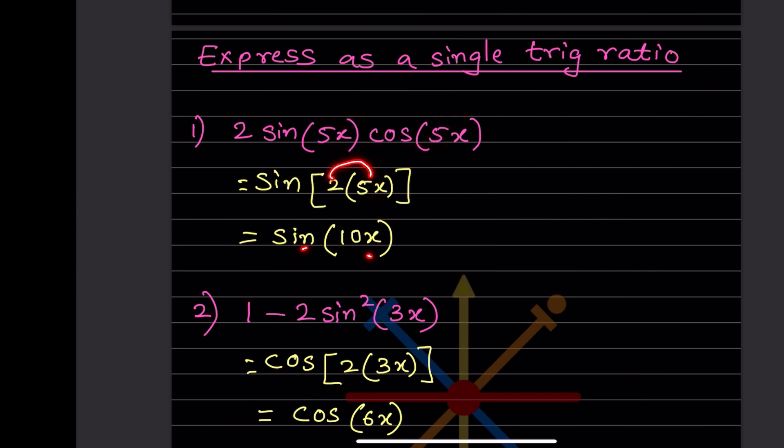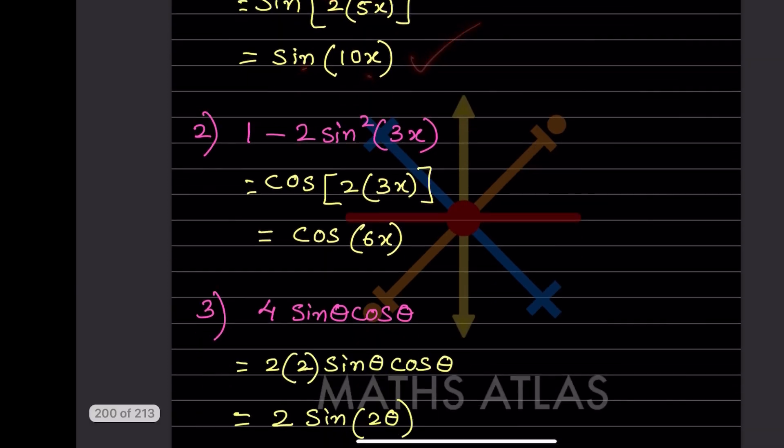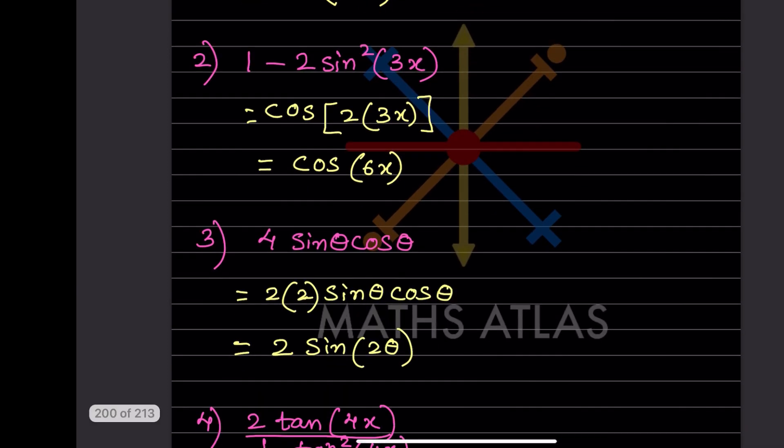Applying sin2θ with θ = 5x, you multiply 2 into 5x, giving sin10x as the answer.